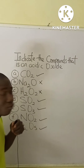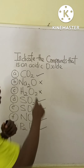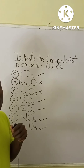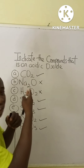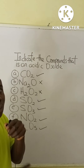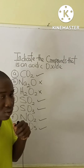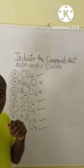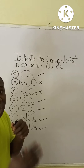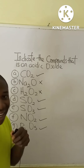Looking at the first option, CO₂: carbon is a non-metal, so when carbon combines with oxygen, the type of oxide formed is an acidic oxide. That is why CO₂ is marked as correct.